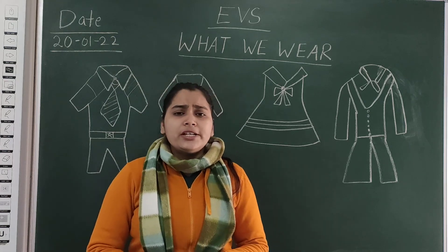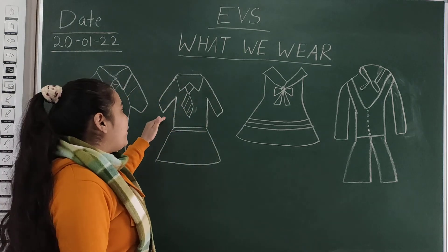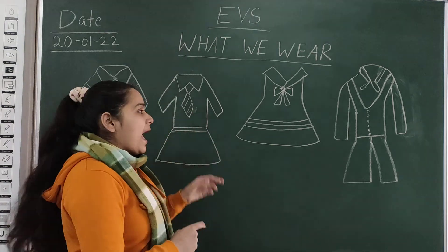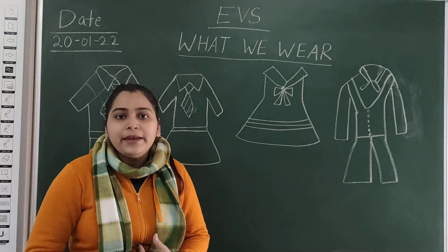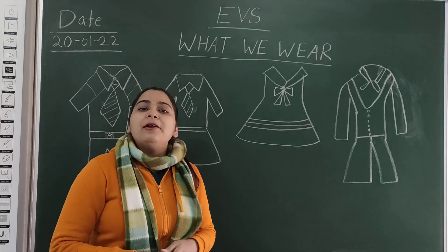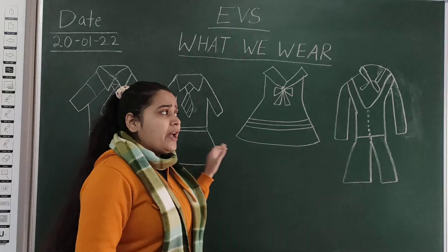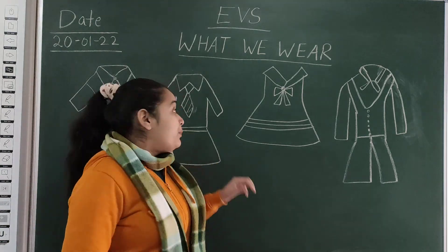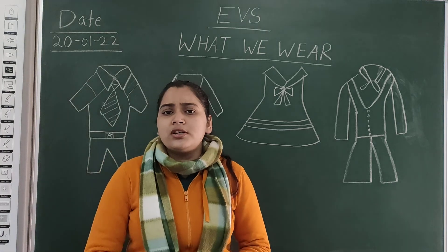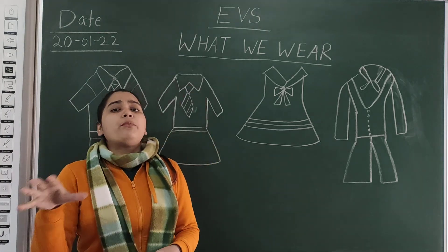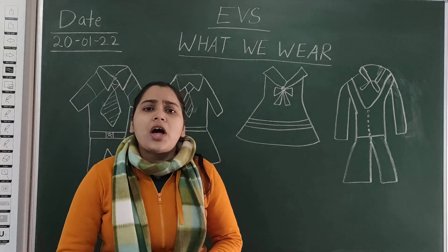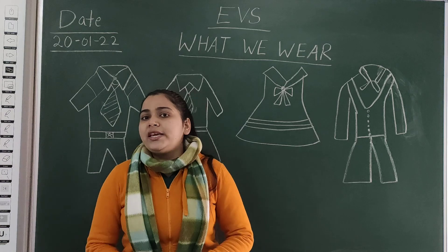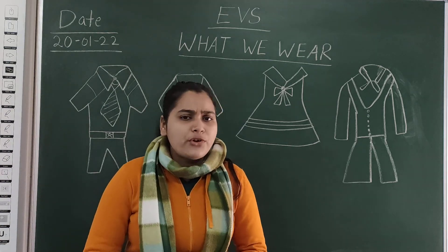And what does a girl wear in school? A girl wears a shirt — half shirt or full shirt — and a tie. And girls wear skirts in the place of pants or trousers. If a boy wears a pant or a trouser, a girl wears a skirt, in different colors.